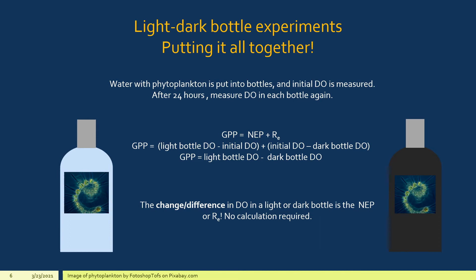Putting these together: GPP equals (light bottle DO minus initial DO) plus (initial DO minus dark bottle DO). The two initial DO readings cancel out, leaving GPP equals the dissolved oxygen in the light bottle after 24 hours minus the dissolved oxygen in the dark bottle after 24 hours. This is a very useful equation — even if you don't know the initial DO, you can calculate GPP from just these two readings.